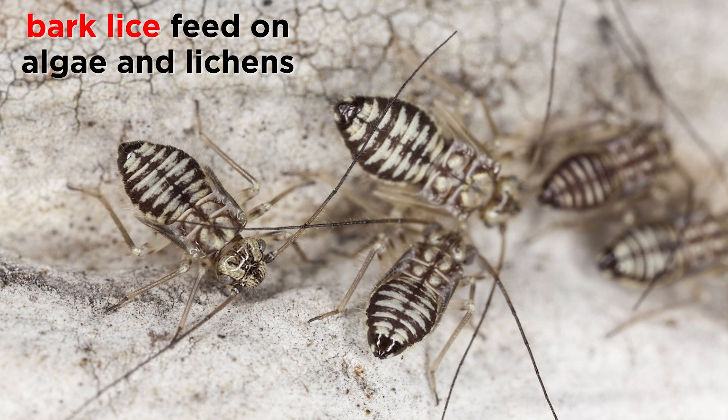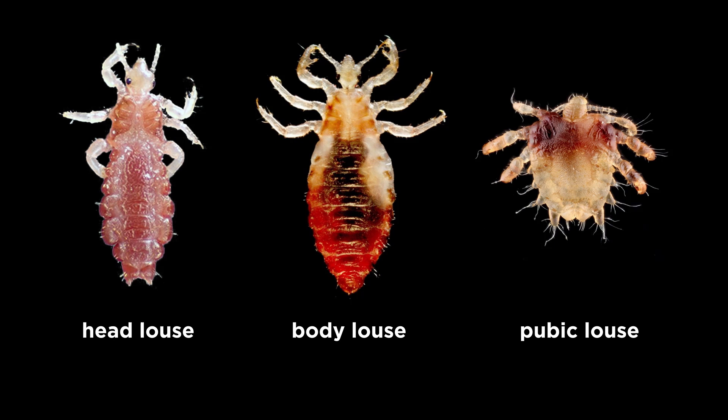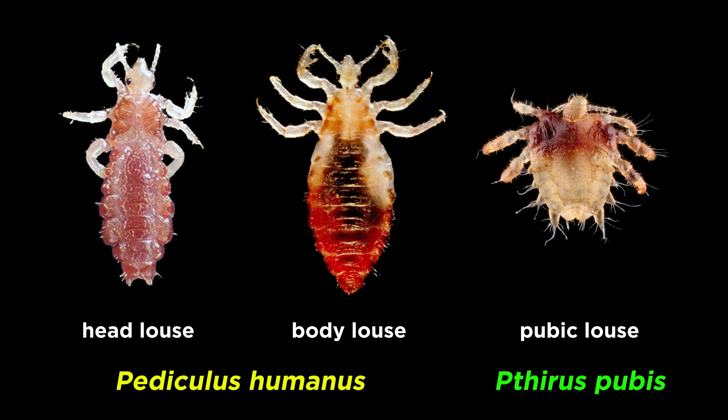Bark Lice are often quite small, with narrow wings they hold over their abdomen when at rest. Meanwhile, the over 5,000 parasitic lice species are all wingless and live upon the tissues of endothermic vertebrates, including nearly every species of bird and mammal, with the exception of the bats and a few others. Two species parasitize humans: Pediculus humanus, which includes the head louse and body louse, and Pthirus pubis, the pubic louse, sometimes called crabs.